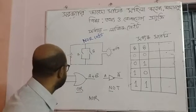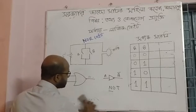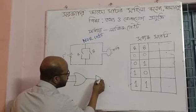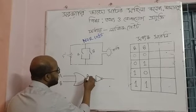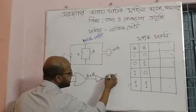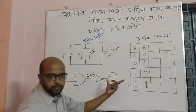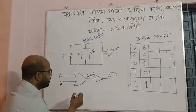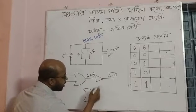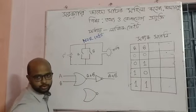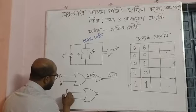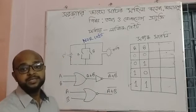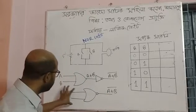NOR gate, NOR gate. A, A — math, and this will be 0. Therefore, best of all, how did you do this? This is the NOR gate.